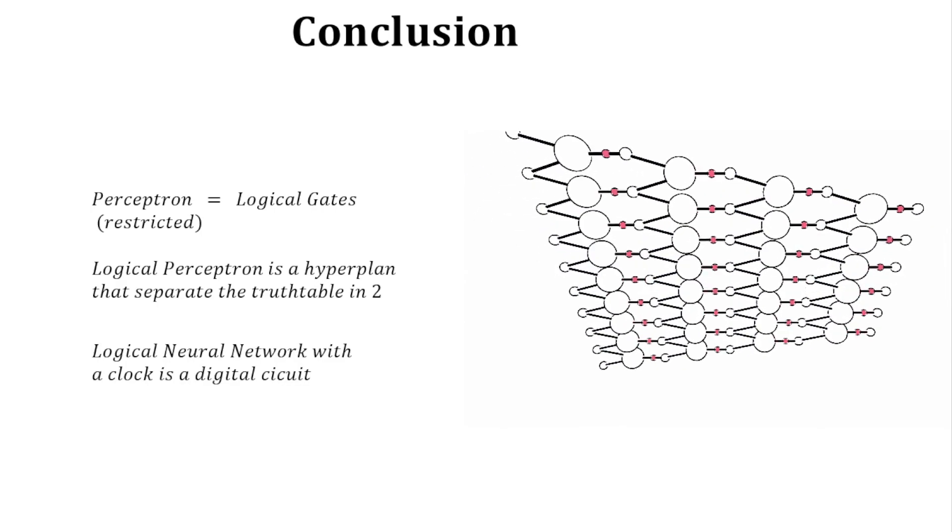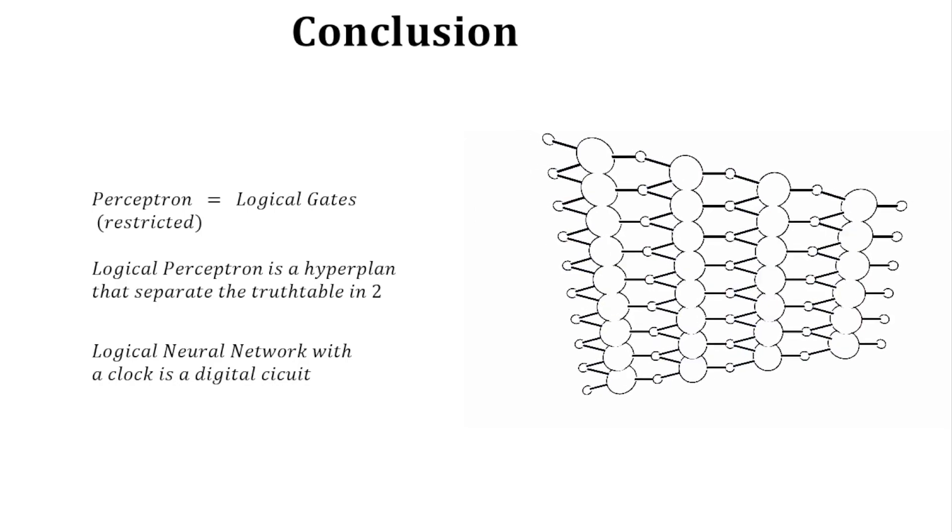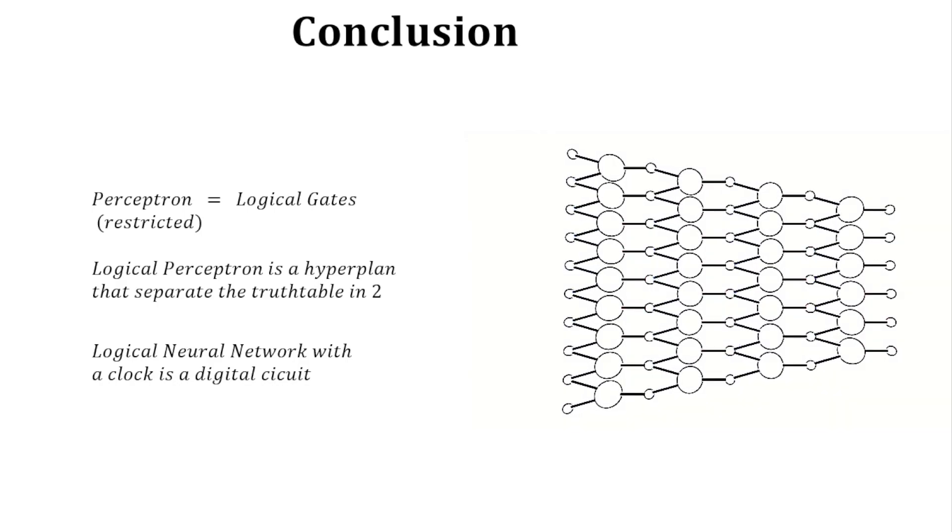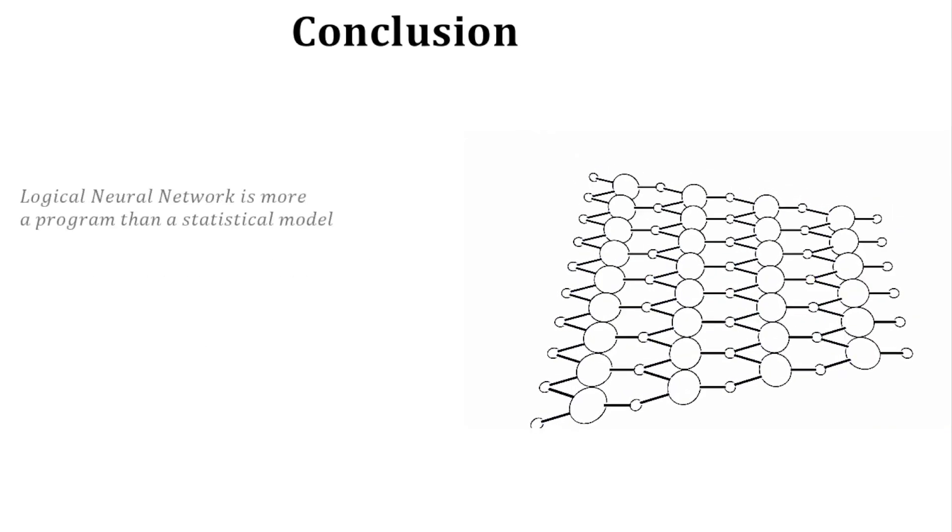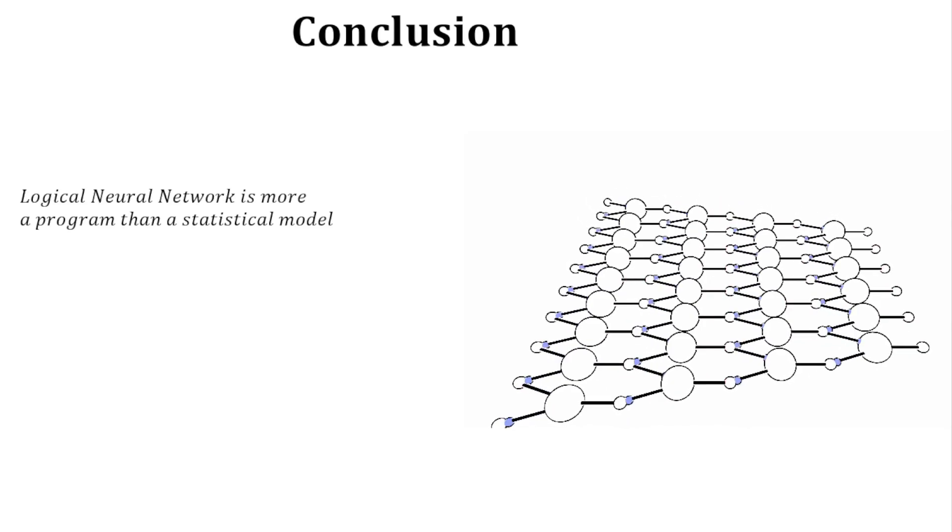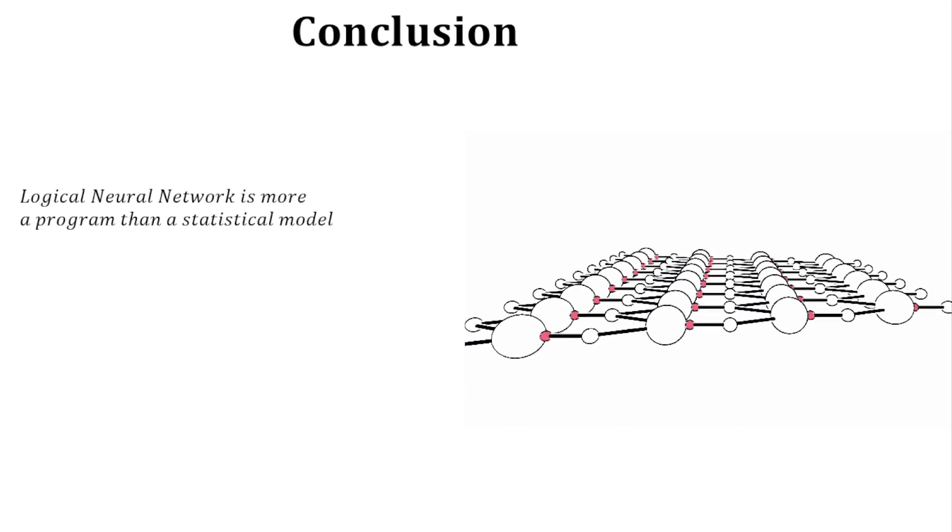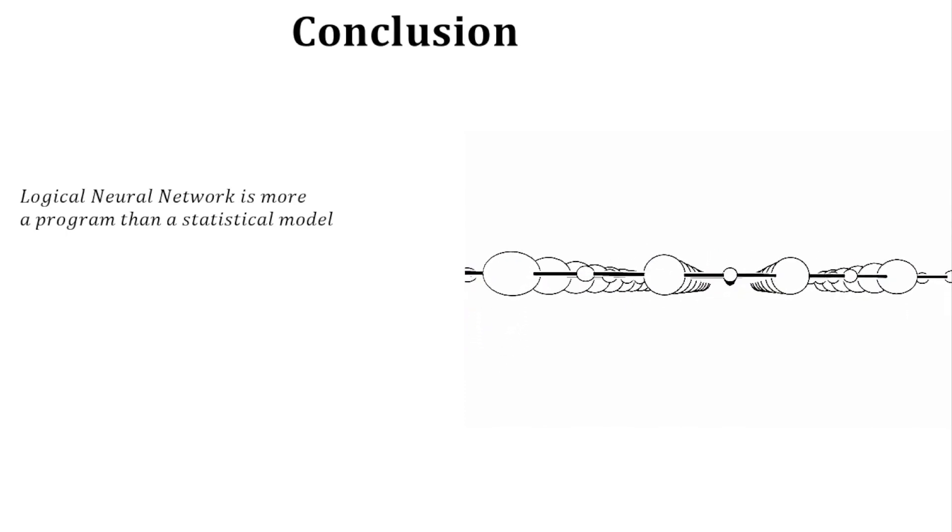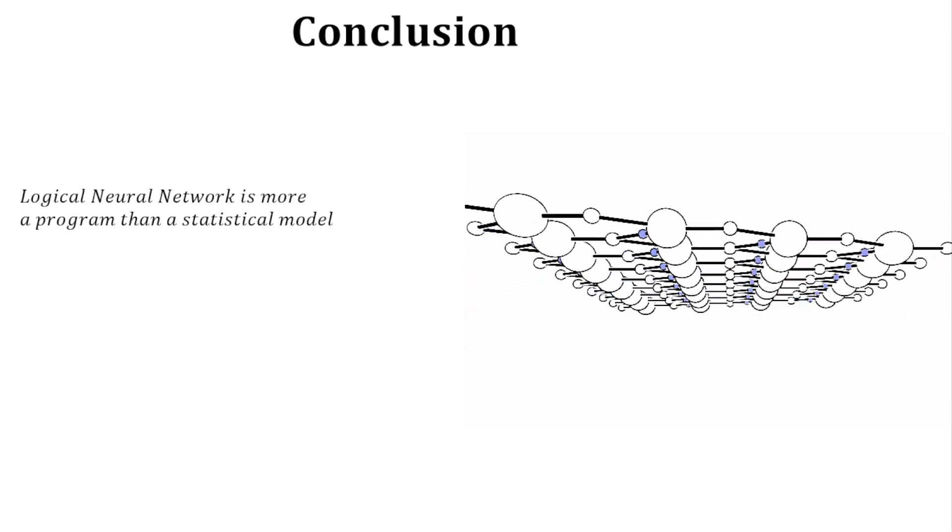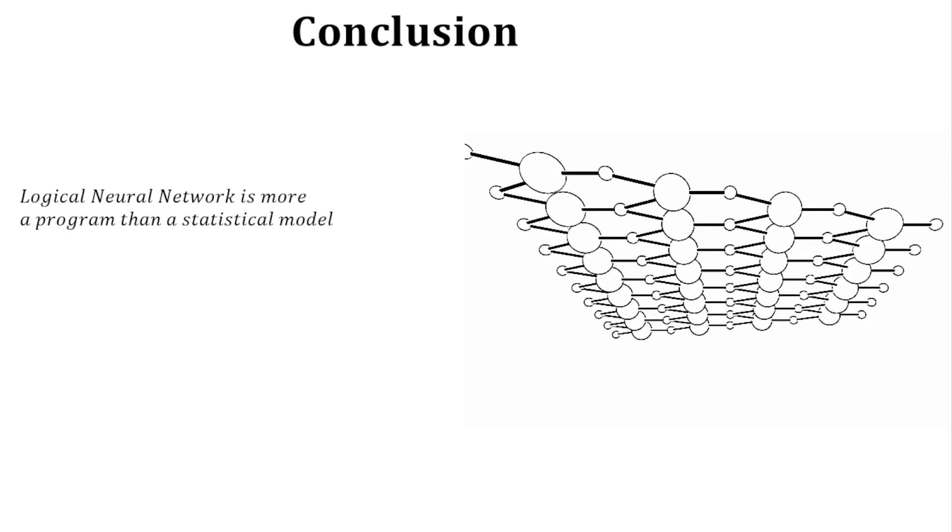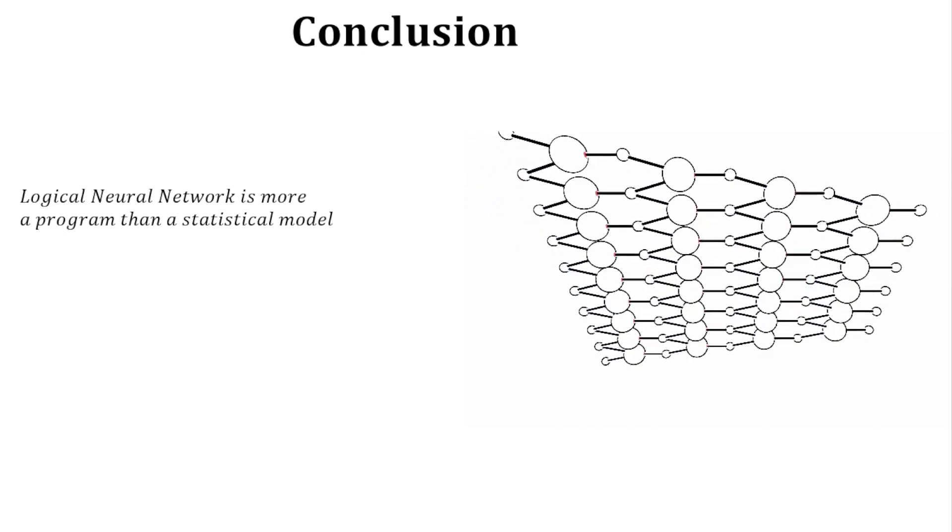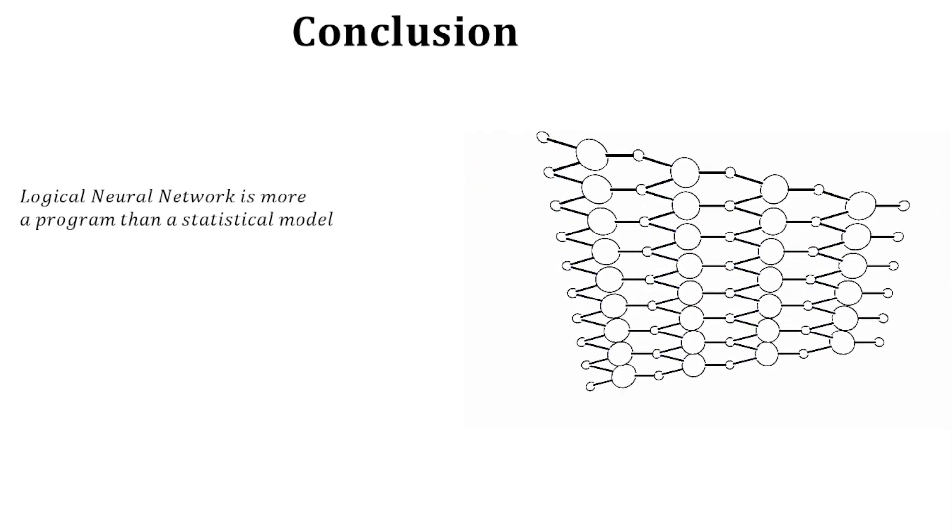The logical approach is far from the usual machine learning approach with an optimization function. It doesn't apply here anymore because logical neural networks are closer to a program than a statistical model.